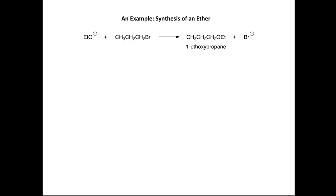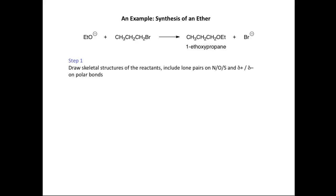We'll now look at our first example: the synthesis of an ether. We're going to react the ethoxide ion with 1-bromopropane to form 1-ethoxypropane together with Br minus. We'll now draw a curly arrow mechanism following each of the seven steps. Here are our skeletal structures: the ethoxide ion, 1-bromopropane, and the products.